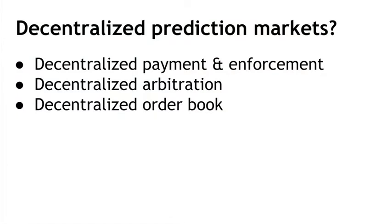So could we build a decentralized prediction market? Decentralization is the name of the game with Bitcoin. There are a few tasks we'll have to decentralize to make this work. First, we need payment and enforcement of bets — all decentralized. Second, we need decentralized arbitration, which is the process of asserting which outcomes have actually happened. And third, we need a decentralized order book — a way for buyers and sellers to meet that doesn't rely on a centralized clearinghouse. We'll go through each of these challenges in order.